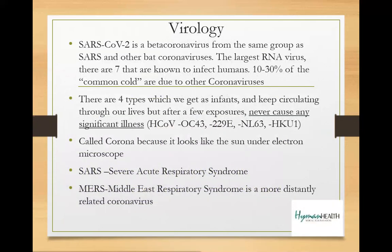Next, virology. When we talk about SARS-CoV-2, we're talking about a beta coronavirus that comes from bat coronaviruses. This is the largest RNA virus — you've heard about those mRNA vaccines; they're geared towards the RNA of that virus. Notably, 10% to 30% of common colds are due to coronavirus, which means statistically speaking, you have already been exposed to coronavirus at some point in your life.